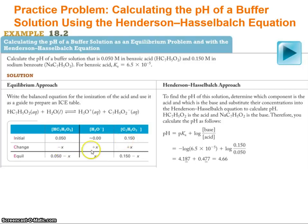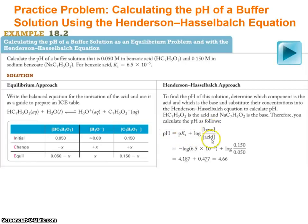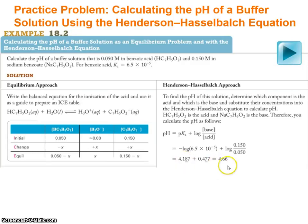We'll lose a little bit of benzoic acid, form some protons, form some benzoate, giving equilibrium concentrations of 0.05 minus x benzoic acid, x H3O+, and 0.15 plus x benzoate. Putting that into the Henderson-Hasselbalch equation: pH equals pKa plus log of the base over acid, which is minus log(6.5×10⁻⁵) plus log(0.15/0.05), giving 4.18 plus 0.477, or 4.66. It's a little bit higher than the pKa, so that makes sense.